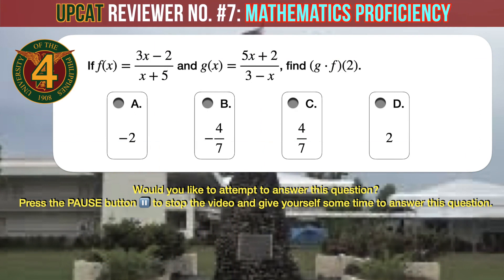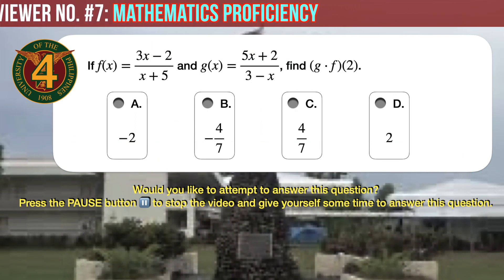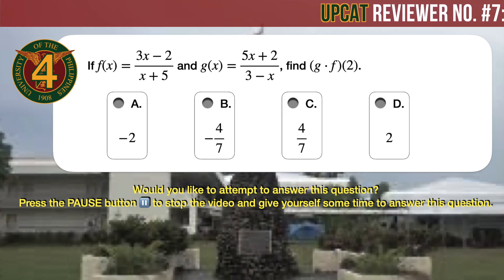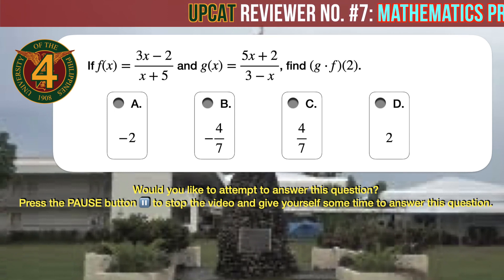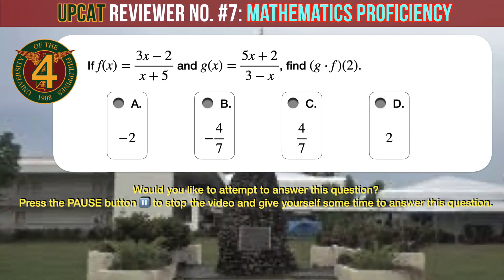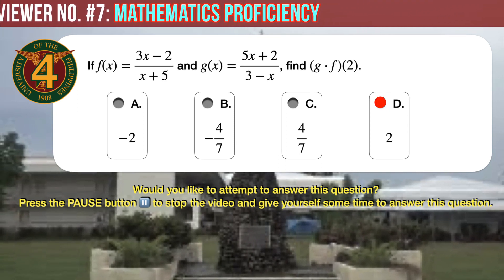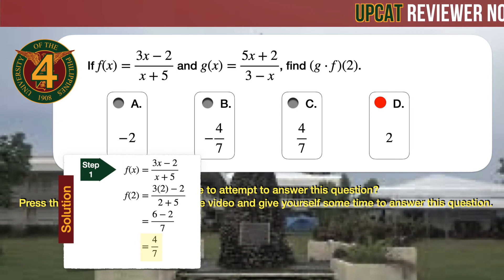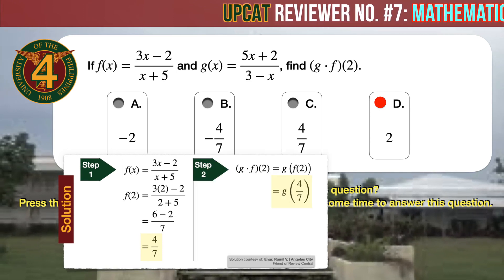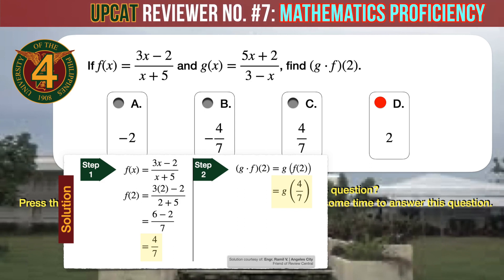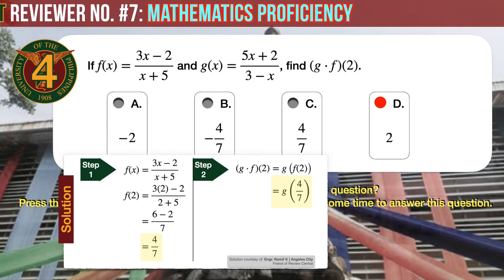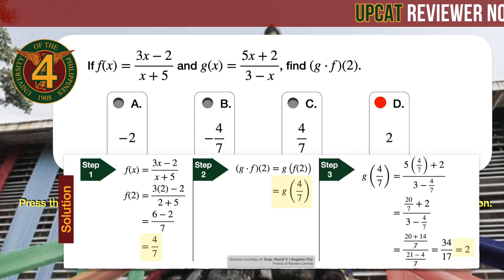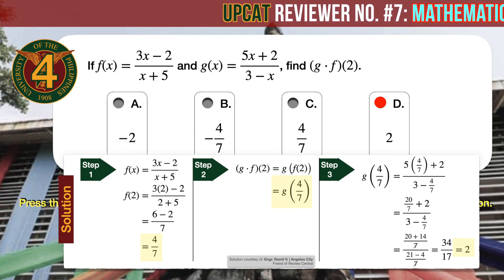Question number 4. If f of x equals the quantity 3x minus 2 over the quantity x plus 5, and g of x equals the quantity 5x plus 2 over the quantity 3 minus x, find g times f of 2. The correct answer is D, 2. First substitute x equals 2 into f of x to get f(2) equals 4 over 7. Since g times f of 2 means g of f(2), we compute g of 4 over 7. Replacing x with 4 over 7 in g of x gives the final answer of 2.